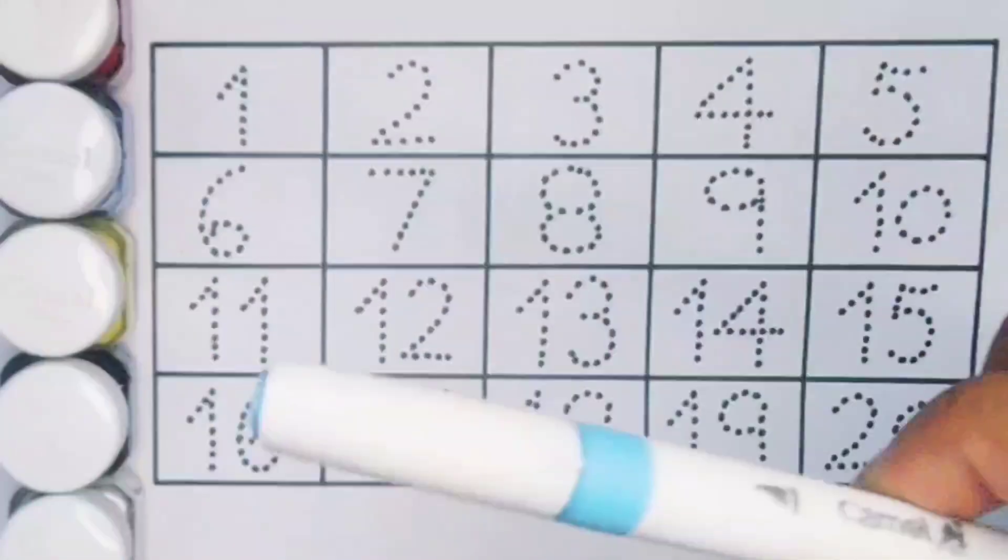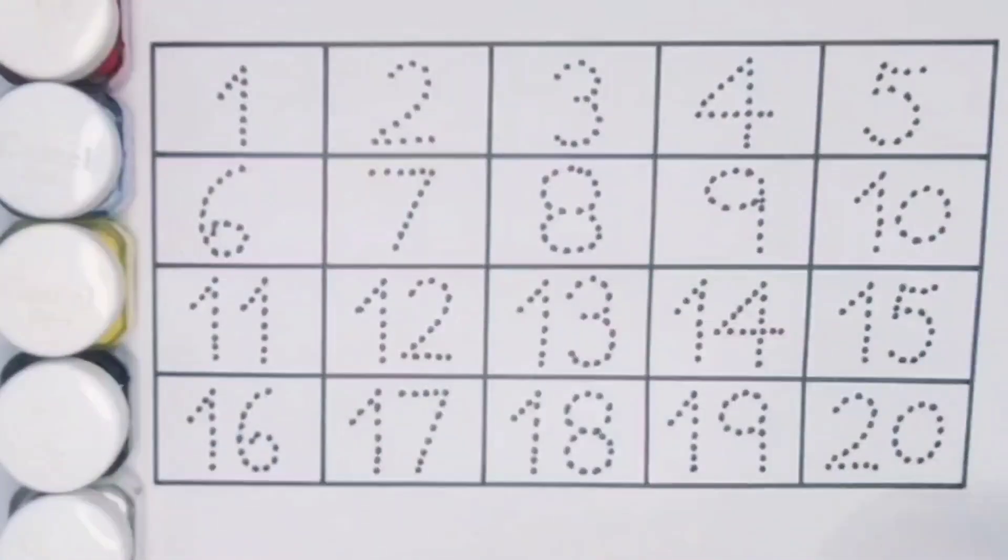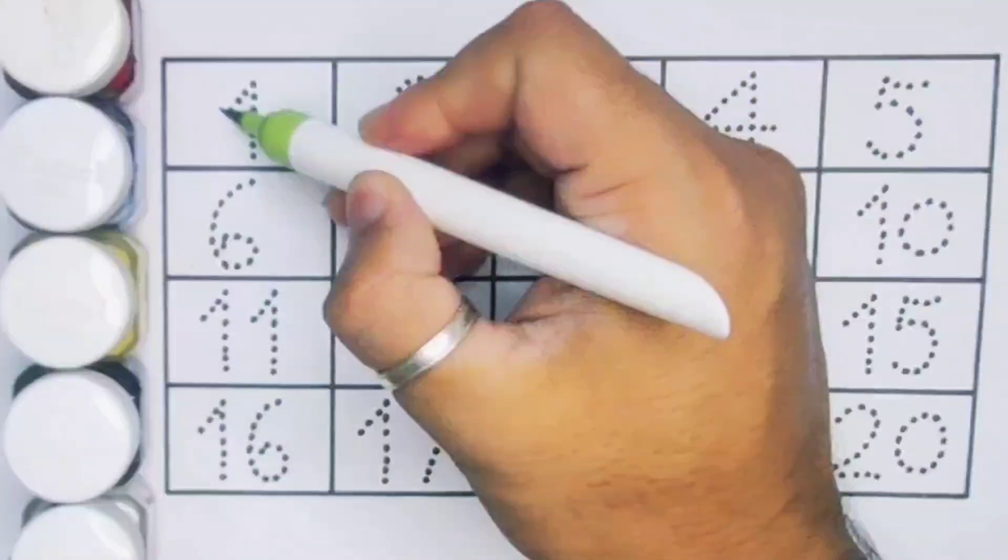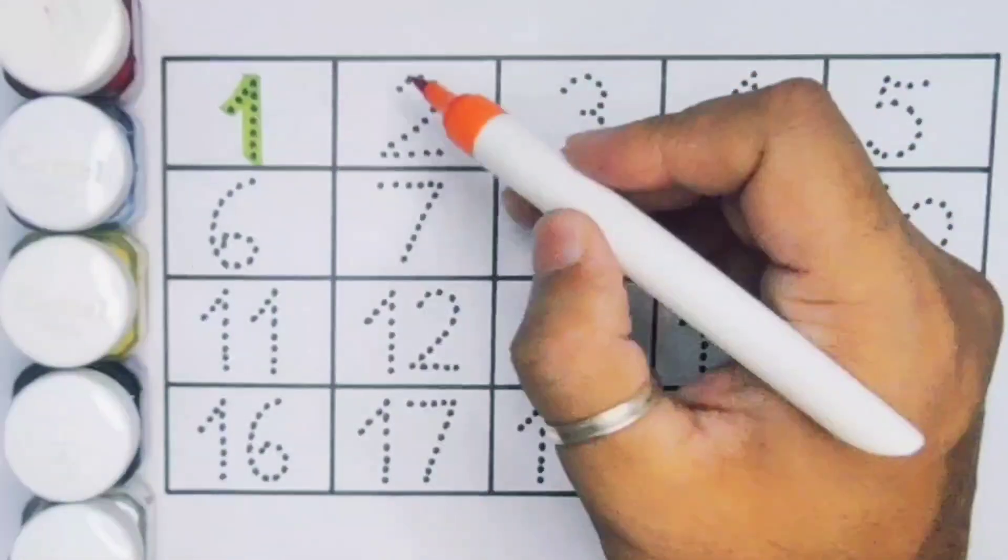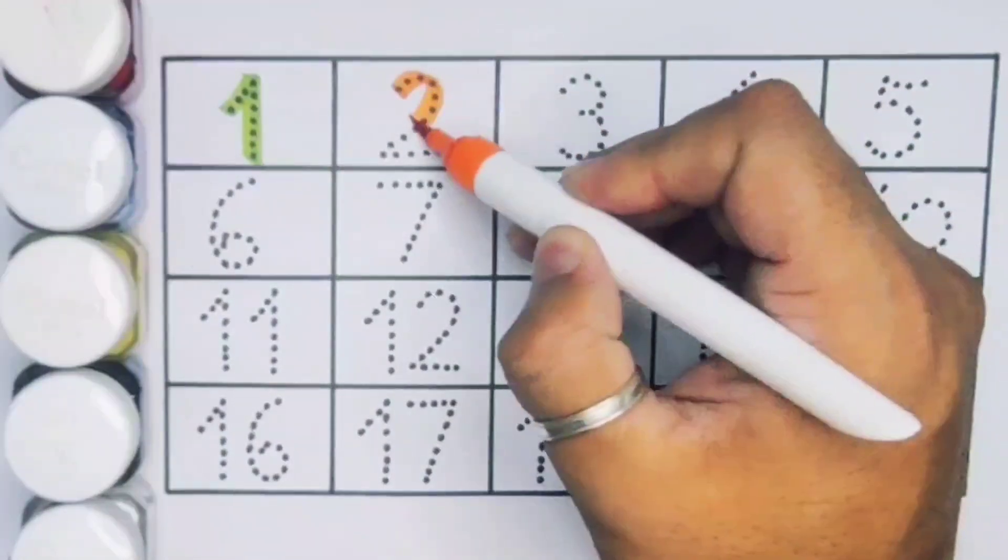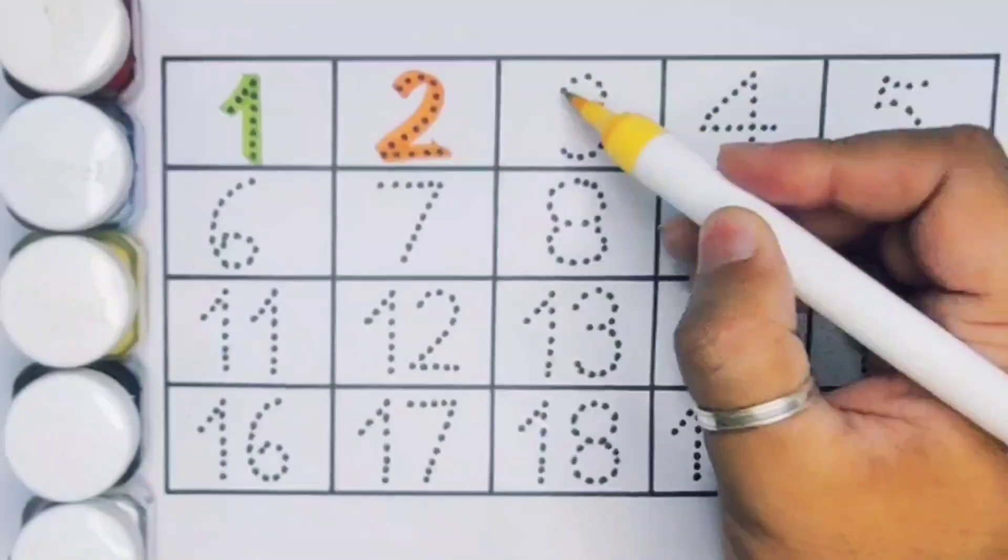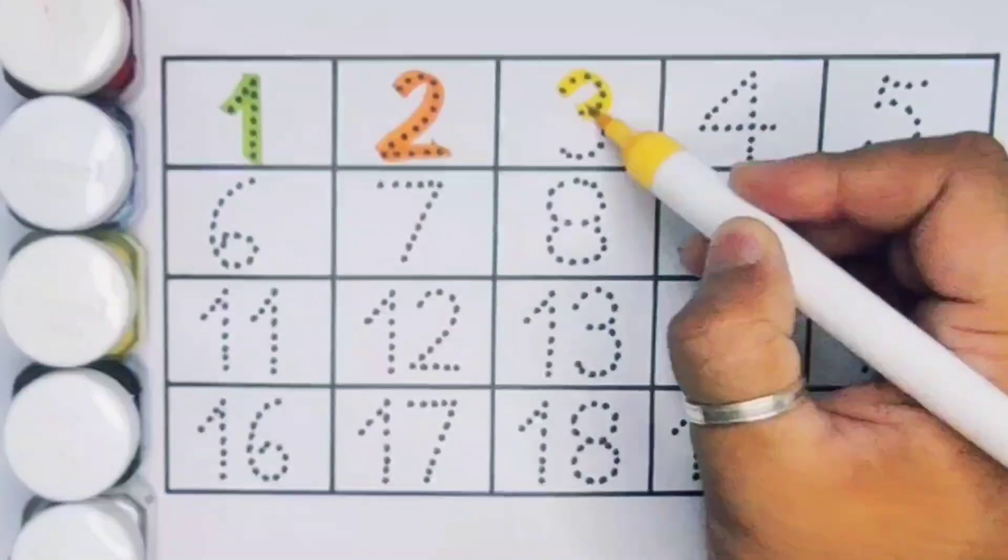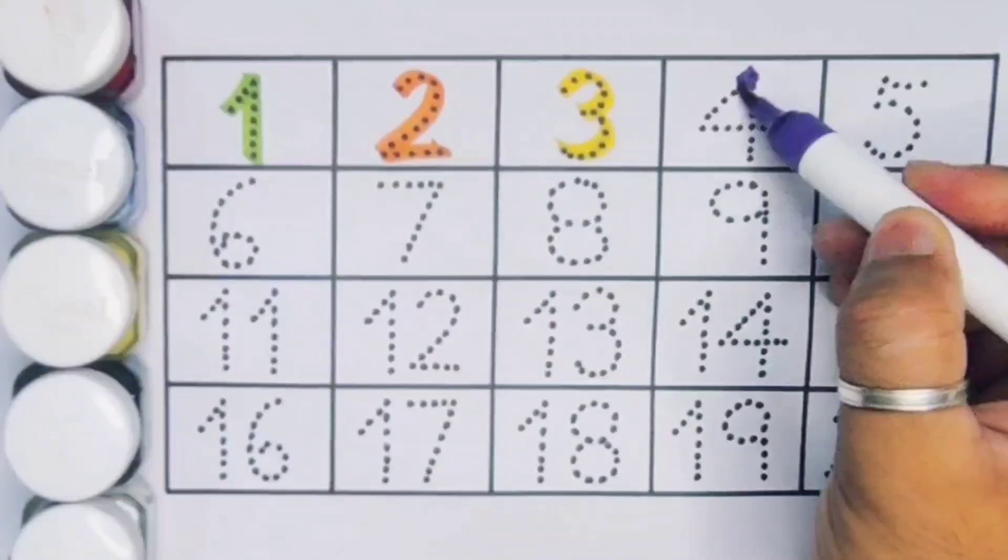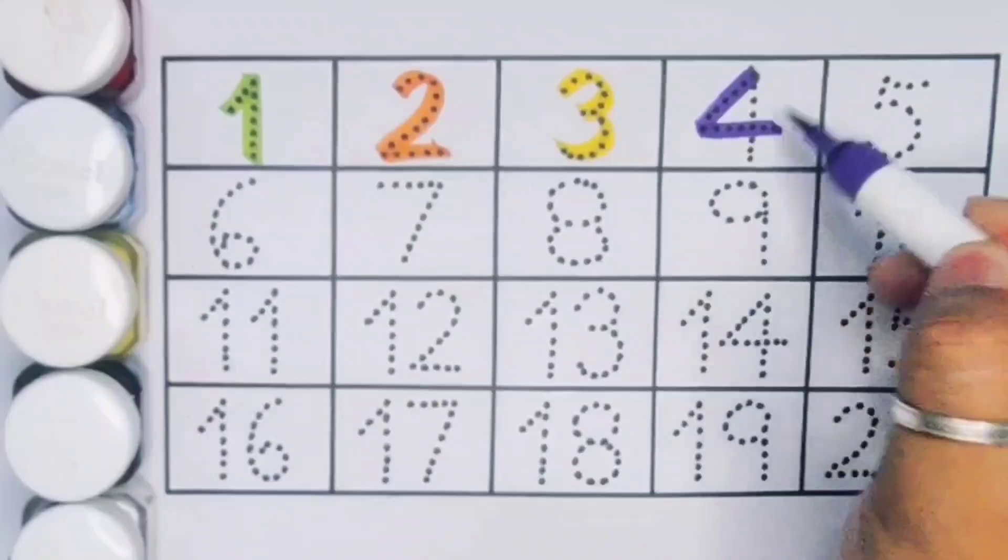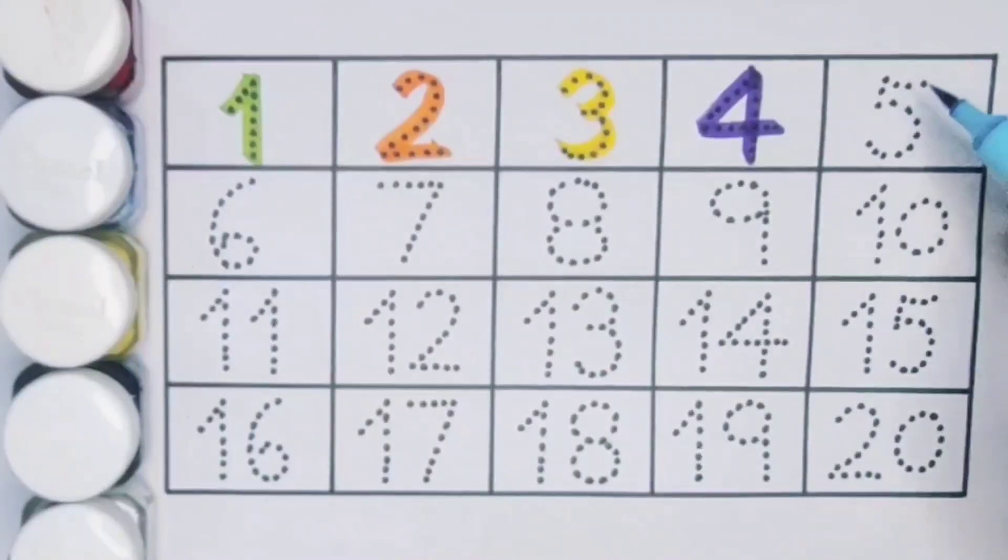Sky blue color. Now let's learn the numbers counting one to twenty. First, one, number one. Next case two, number two. Next case three, number three. Next case four, number four. Next case five, number five.